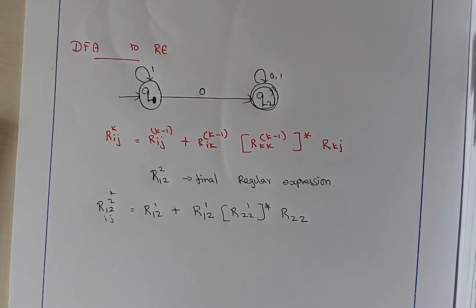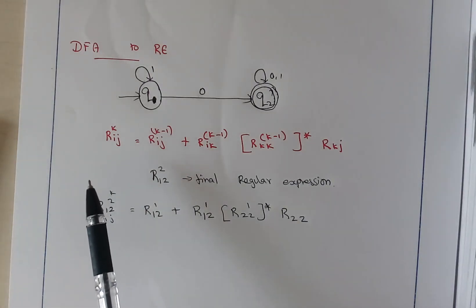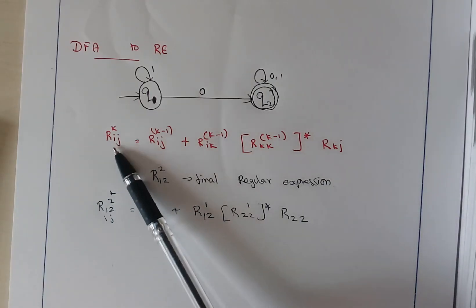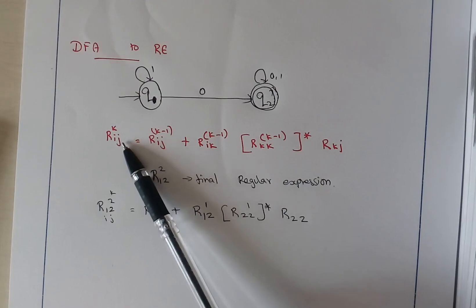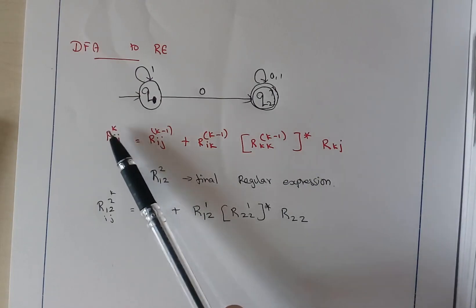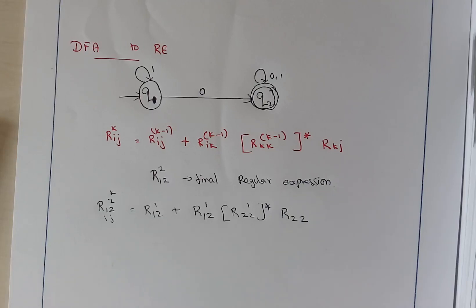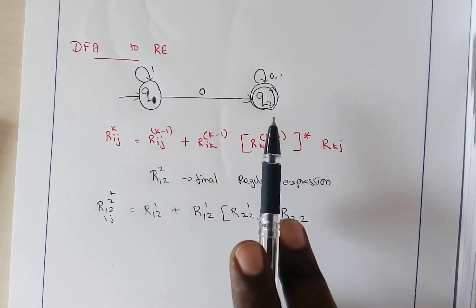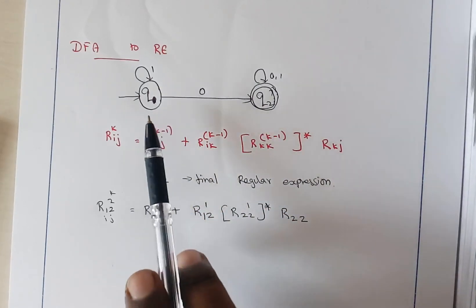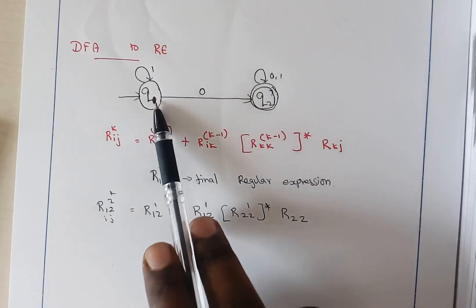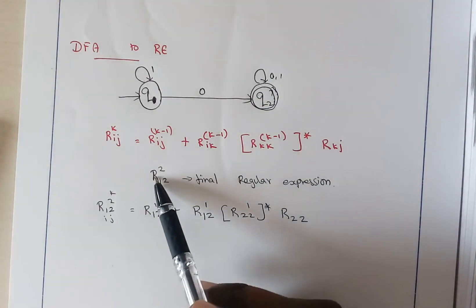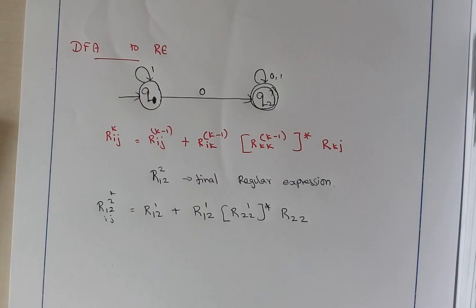We are going to use a formula for this conversion. The formula is written here where R represents the regular expression, I represents the starting state, J is the destination node or the final state, and K represents the number of possible intermediate nodes. The final regular expression will be R12 of 2, where the source node is 1, the final node is 2, and the number of possible intermediate nodes is 2.